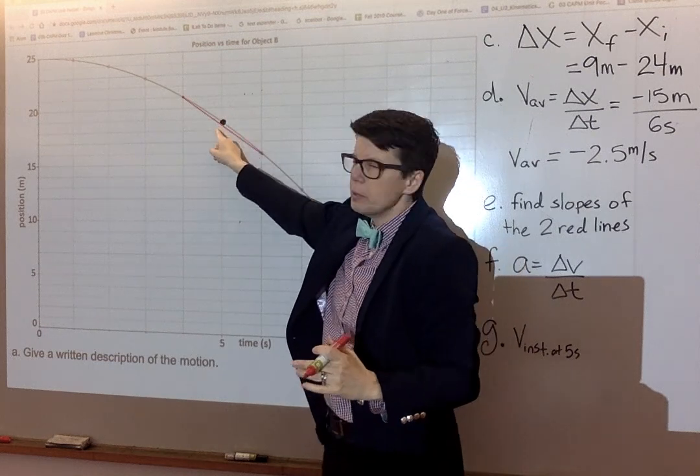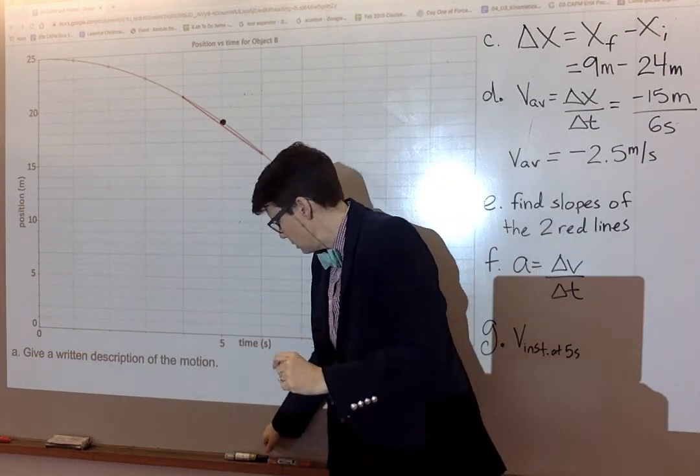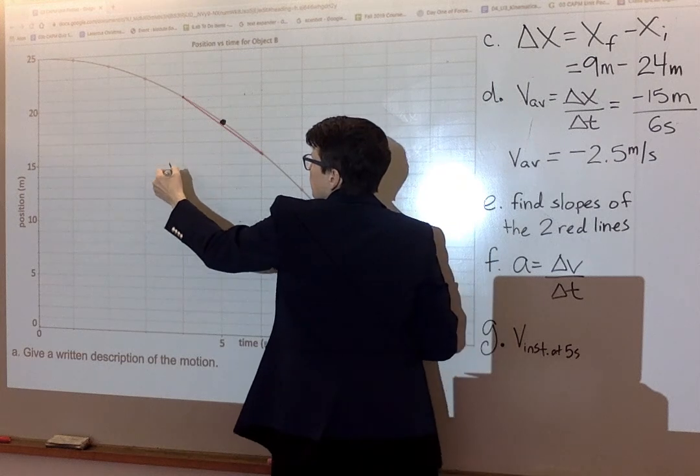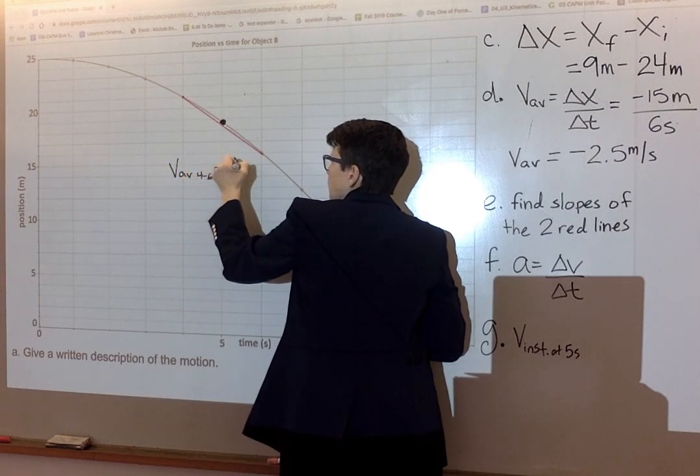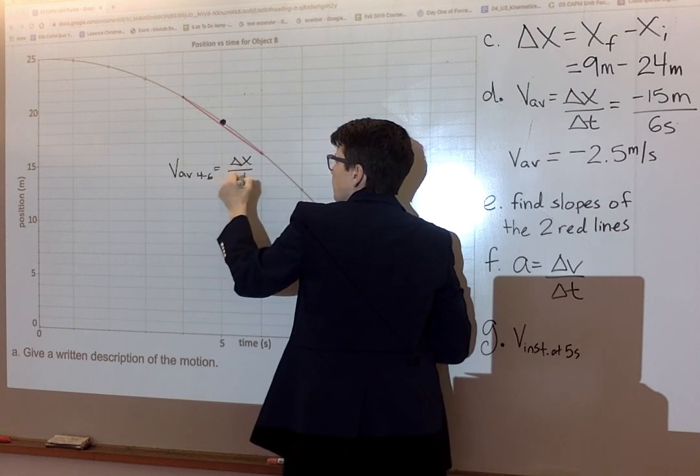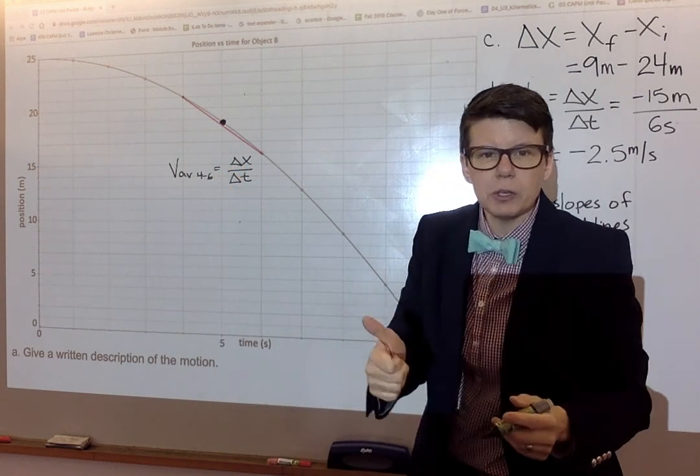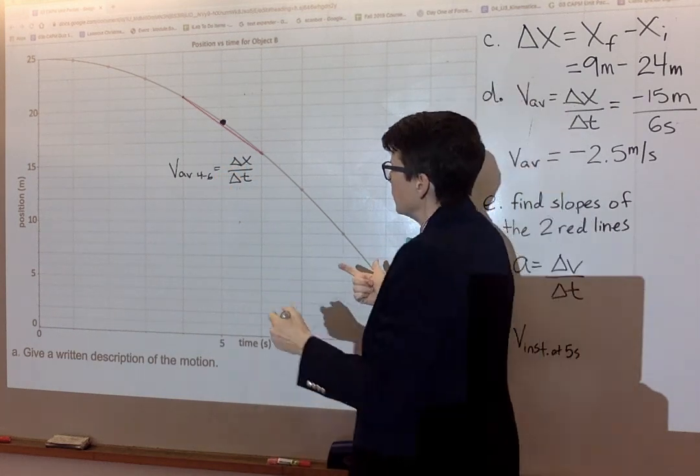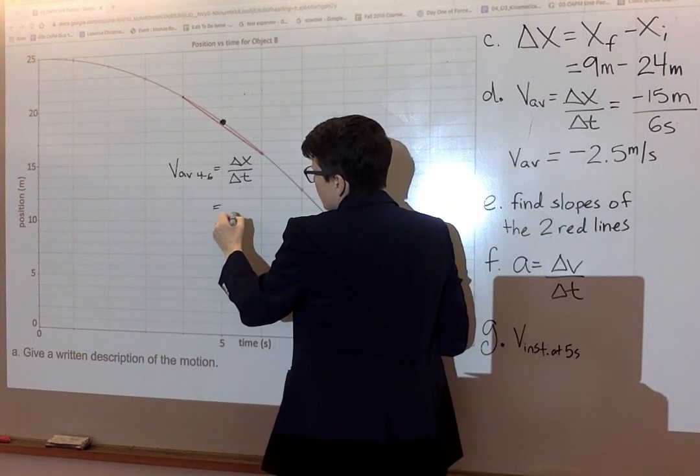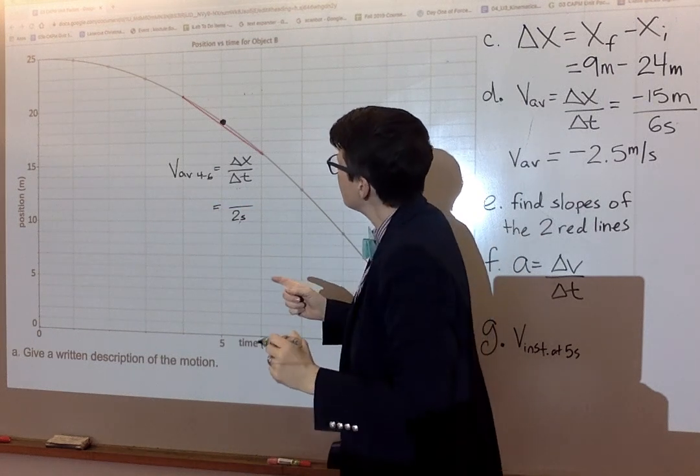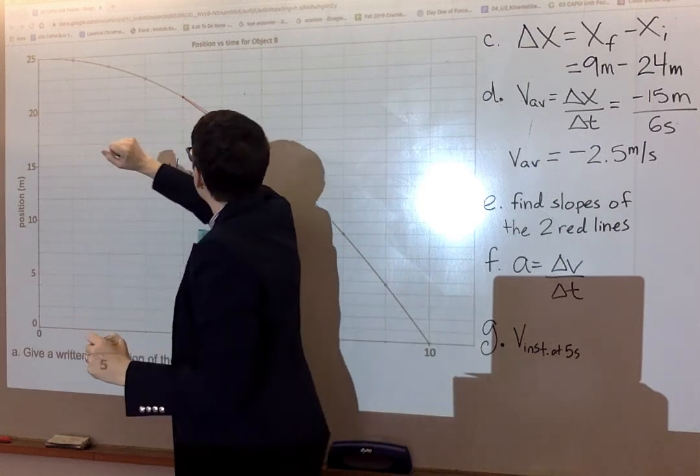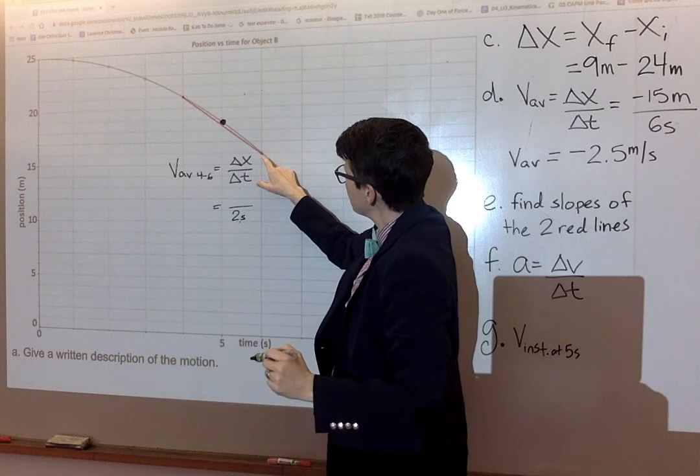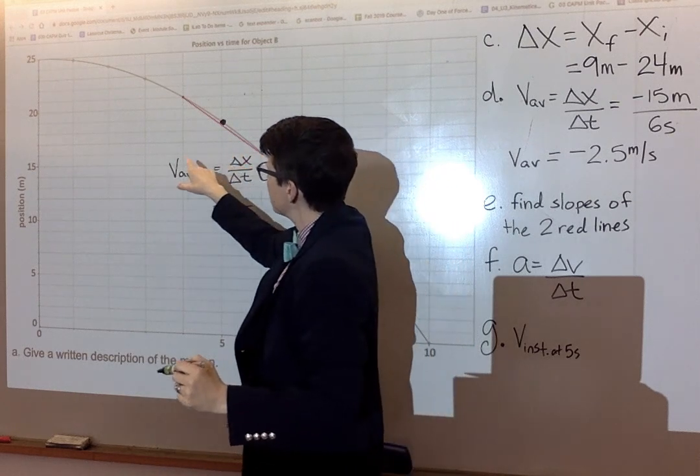I need to find the displacement and divide it by the time interval. So the time interval is easy. That's a two second time interval. And then the displacement. Let's see. At four seconds, 21 meters. At six seconds, 16. So 16 meters minus 21 meters.